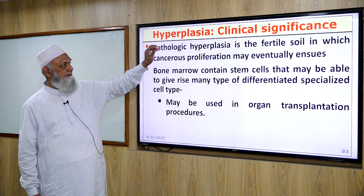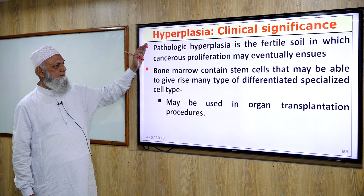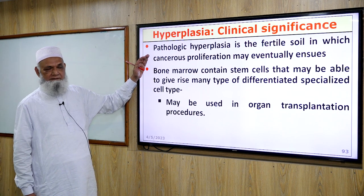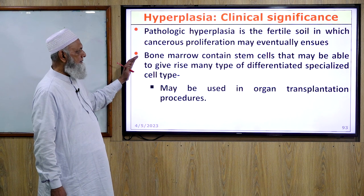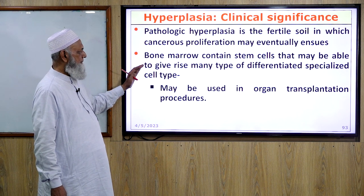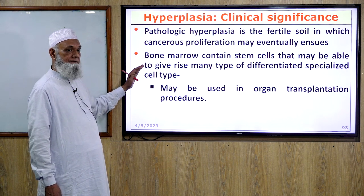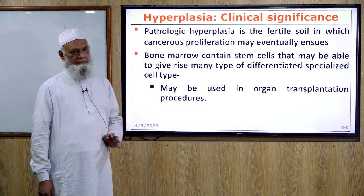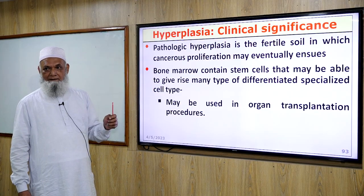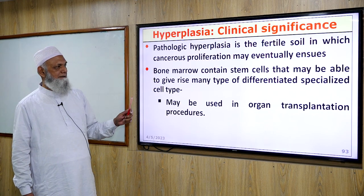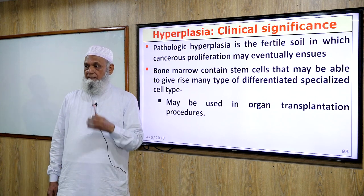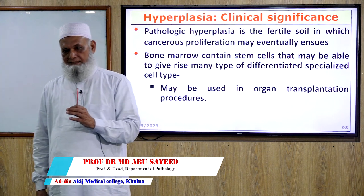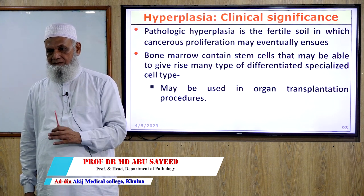Clinical significance of hyperplasia: pathological hyperplasia is the fertile soil in which cancerous proliferation may eventually ensue. Bone marrow contains stem cells that may be able to give rise to many types of differentiated specialized cells, with capability to differentiate into all embryonic layers — ectoderm, mesoderm, and endoderm.